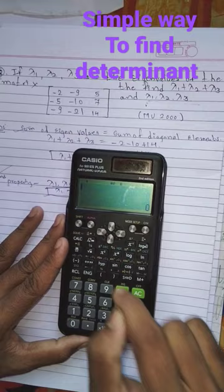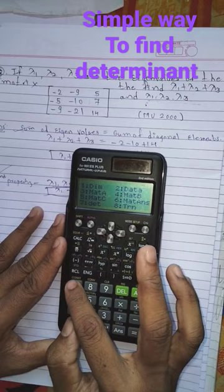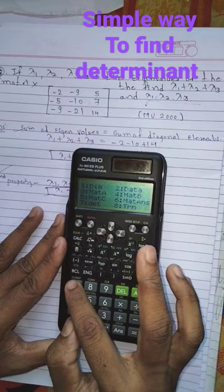Remember this step: select the 7th option which is determinant, then again press shift+4, select option 3 which is mat A, and it equals to -2. That's all.